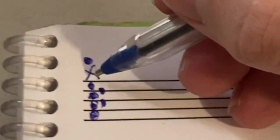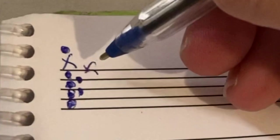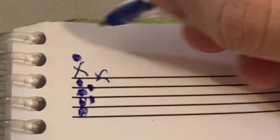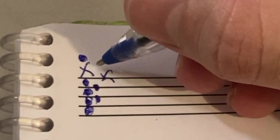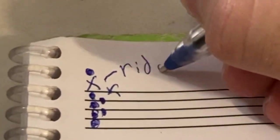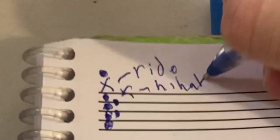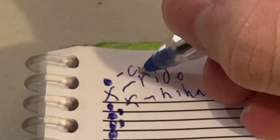Hi-hat is usually an X right above the top, or sometimes it'll be on the line. But sometimes that'll be the ride. So depending on what sheet music you use, you might see a key that says ride, or hi-hat or crash.